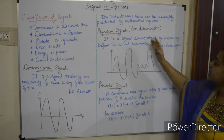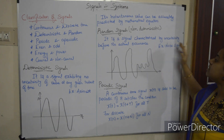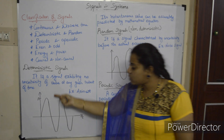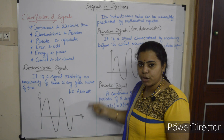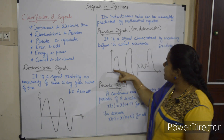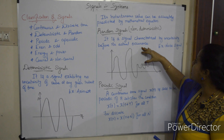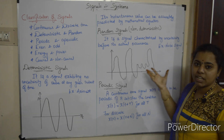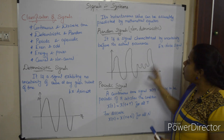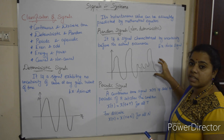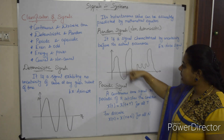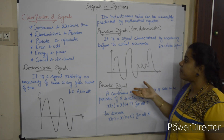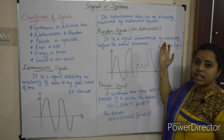It is a signal characterized by uncertainty before its actual occurrence. We cannot predict the next value. There is uncertainty — we cannot express this signal in mathematical form. We cannot predict or define the signal. So this is called a non-deterministic signal.